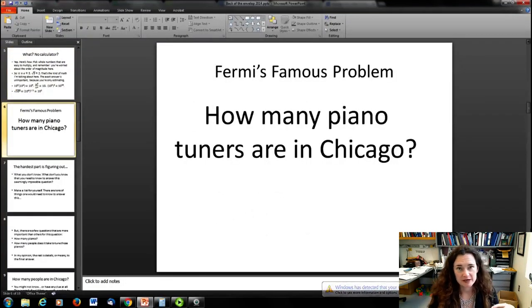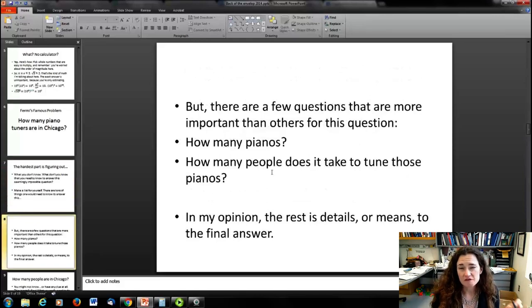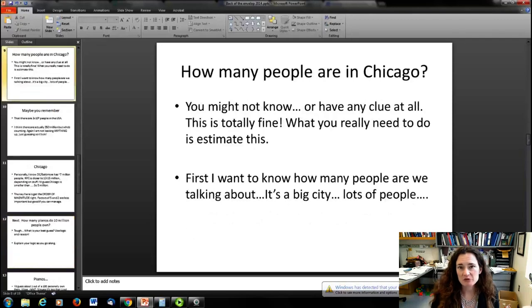Let's go over probably one of the most famous back-of-the-envelope calculations for Fermi: How many piano tuners are there in Chicago? When doing this kind of thing, it seems impossible. You might want to just whip out your phone, but you can estimate it. You need to make a list of values that you might need to complete this calculation and estimate those values. What do you need to know to answer this seemingly impossible question? There's a few things that are probably more important than others: how many pianos are there, and how many people does it take to tune those pianos?